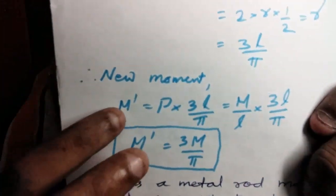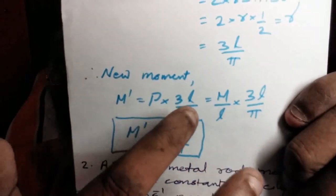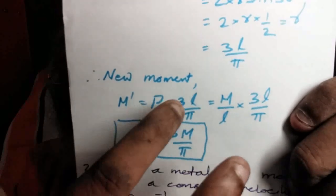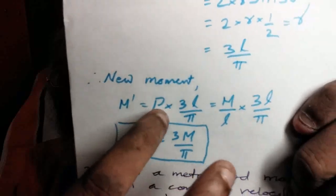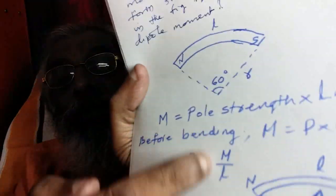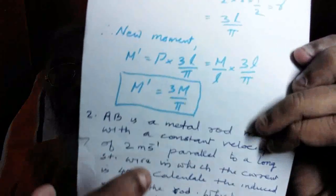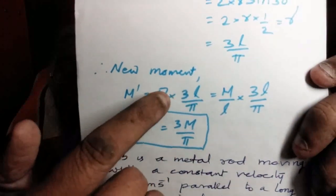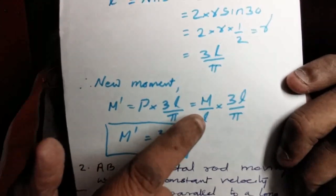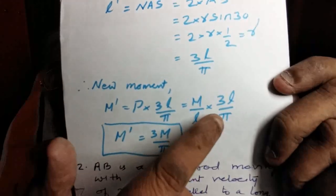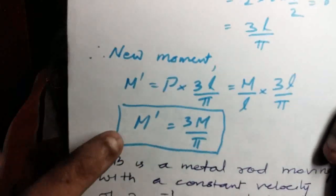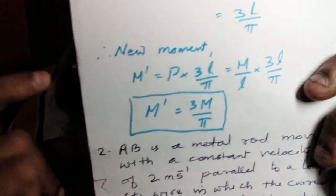New moment M dash equals P into 3L by π. That is M by L into 3L by π. So the new magnetic moment is 3M by π. That is the answer.